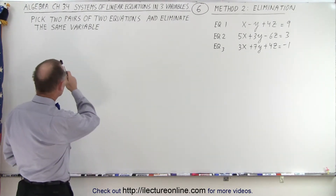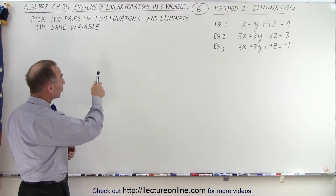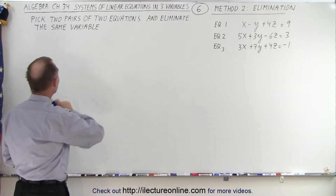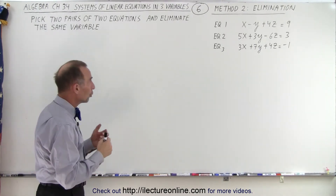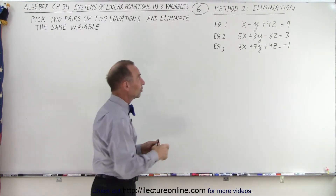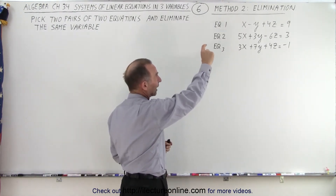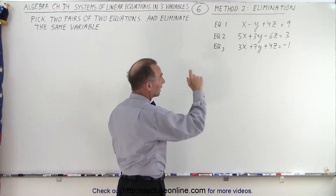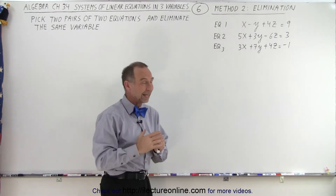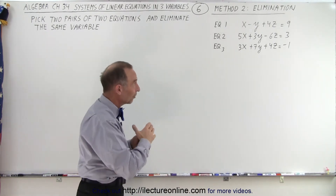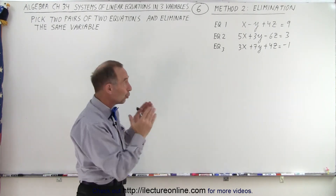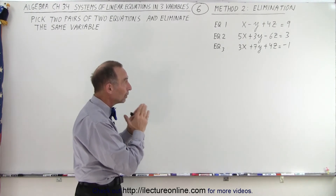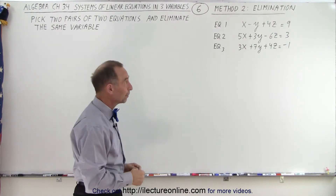Pick two pairs of two equations and eliminate the same variable. So you're going to do this twice. You need to take two of those equations together, eliminate one variable, take another two equations and eliminate the same variable, and then you end up with two equations and only two unknowns. And then you can solve that.